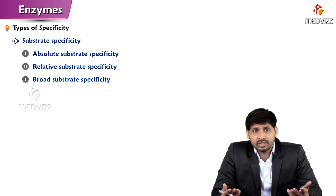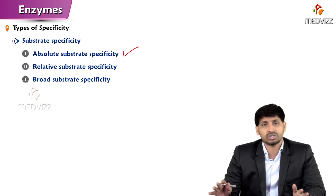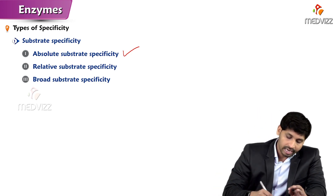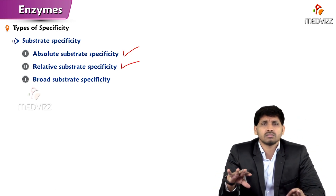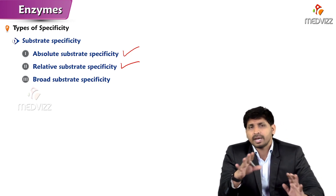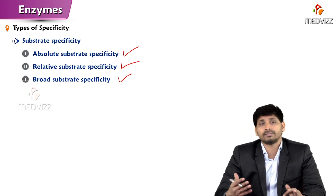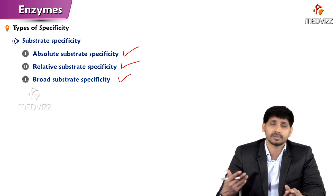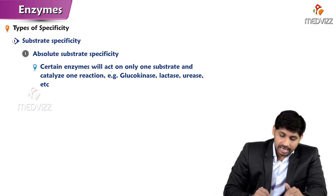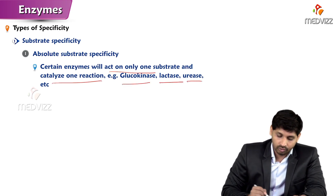Substrate specificity is categorized into three types: absolute specificity, relative substrate specificity, and broad substrate specificity. Absolute specificity means there is no compromise — certain enzymes will act on only one substrate and catalyze one reaction. Examples include glucokinase, lactase, and urease.